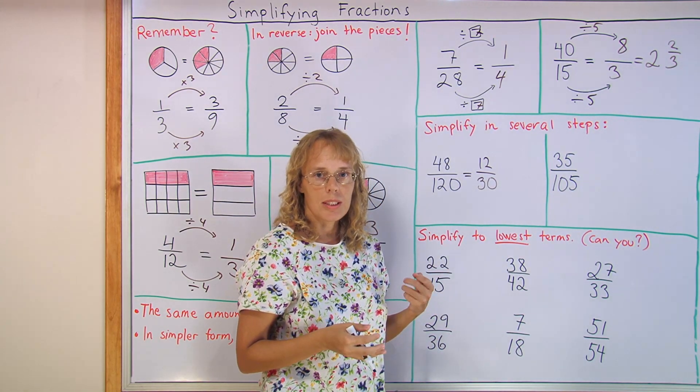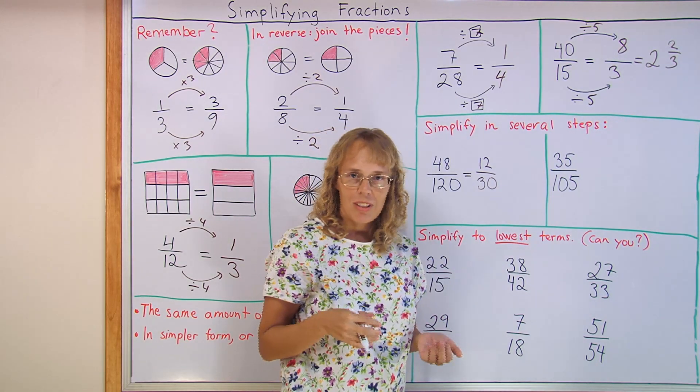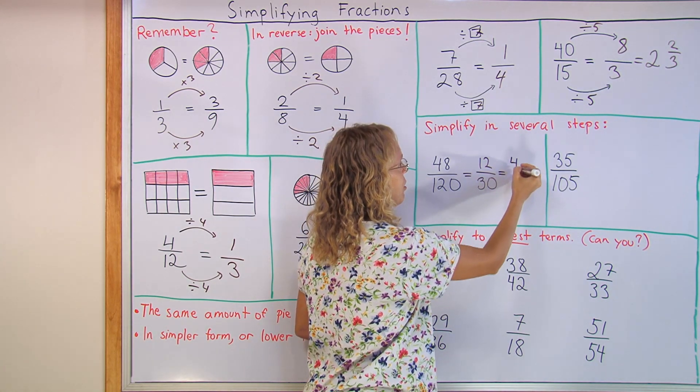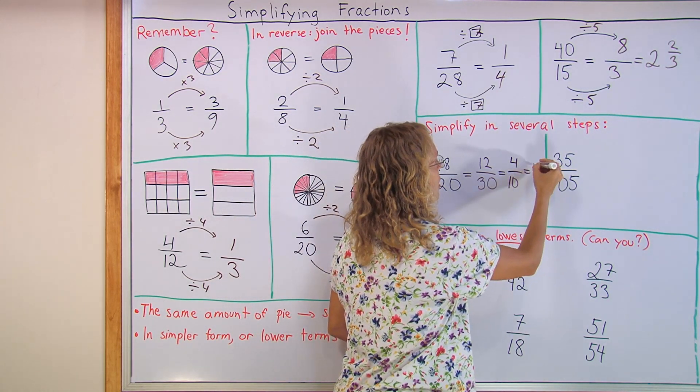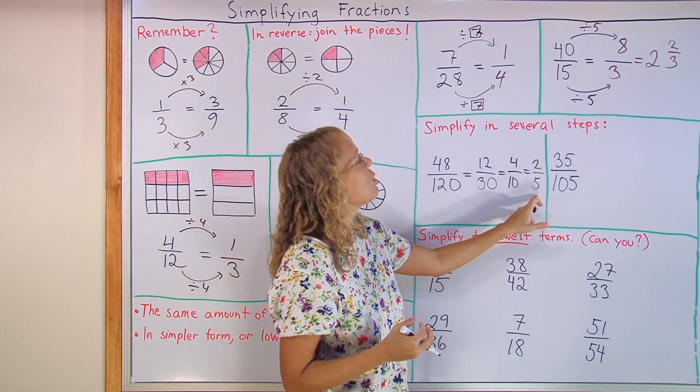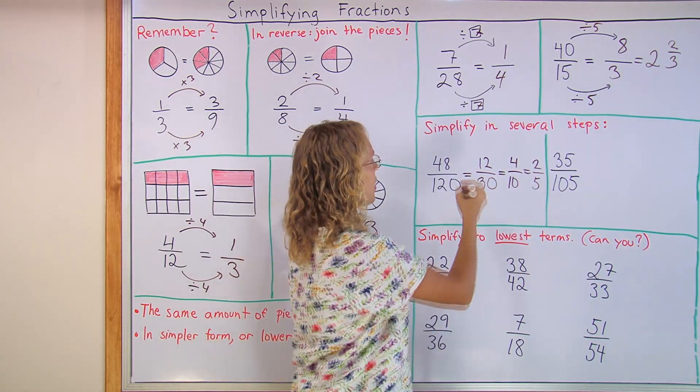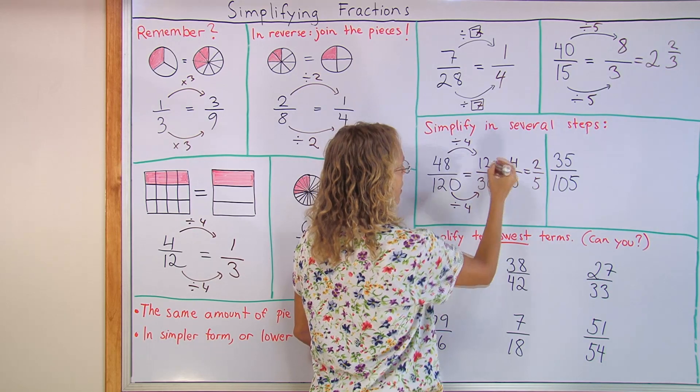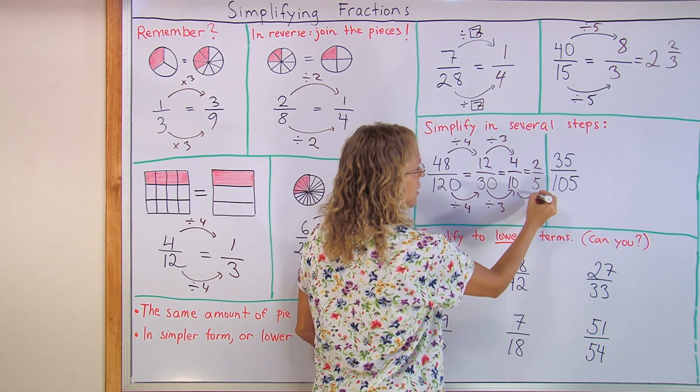And then after that, maybe I noticed that they are both still even numbers. And I divide by three. Twelve divided by three is four. And thirty divided by three is ten. And now I still notice they are both still even numbers. I can still divide by two. Divide both numerator and denominator by two. I'm not dividing the fraction by two. And I get two fifths. See? This is now in lowest terms, we say. Because I cannot simplify it any further. So I went first divide by four. Then I divided by three. And lastly by two.